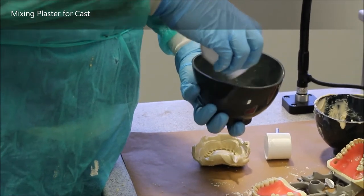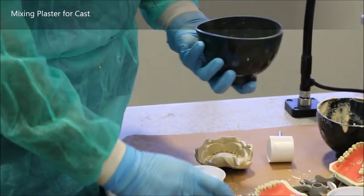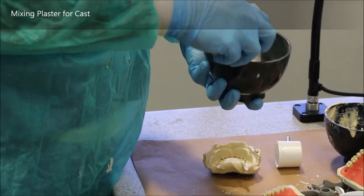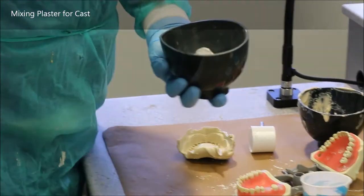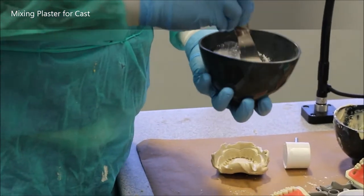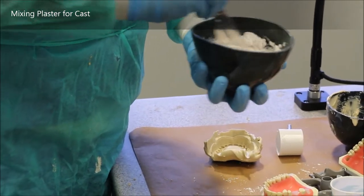If you need to keep an alginate impression to pour up later, you want to cover it with a moist paper towel. But to avoid any distortion, just pour it up immediately.